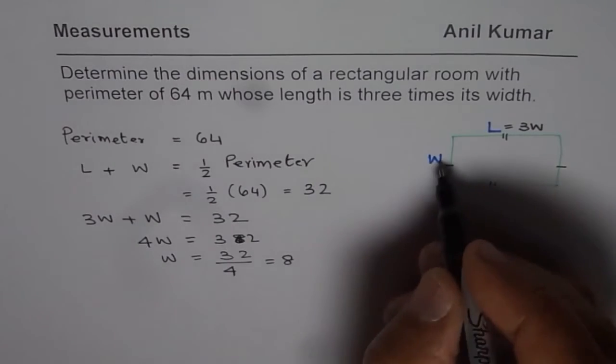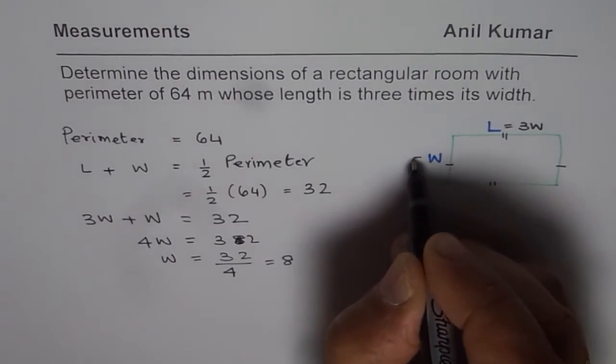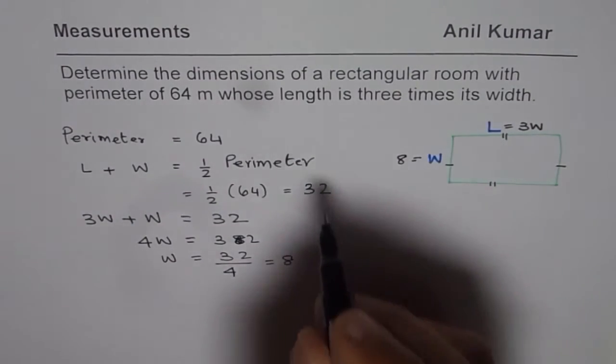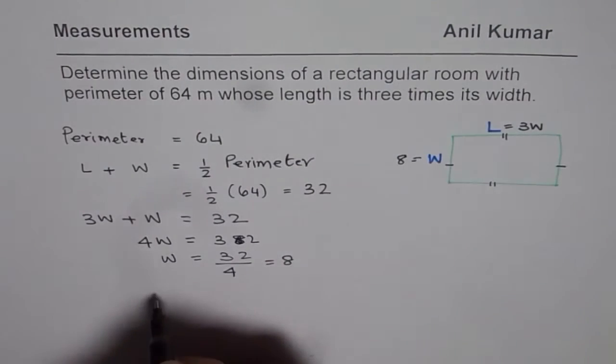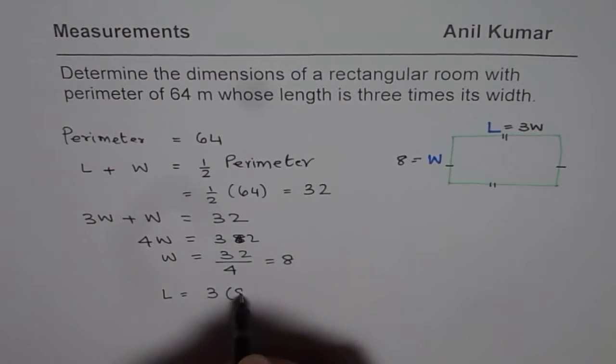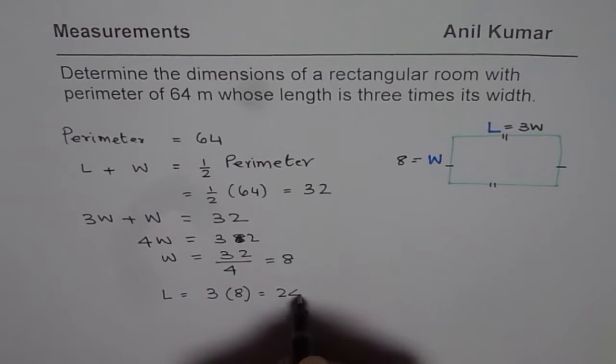Now we know that width is equal to eight, width is eight. And since length is three times the width, we say length is three times eight which is 24.